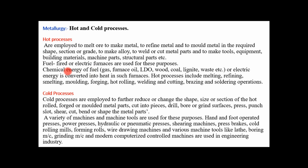Temperature is the major criteria in hot processes, as metal properties change with temperature. To maintain temperature, heat energy is required using fuel burned in furnaces. Sometimes fired furnaces are used, sometimes electric furnaces. In conventional processes, fired fuel furnaces use hydrocarbon combinations — gaseous form, oil form, LDO, HDO, wood, coal, lignite, or waste. Nowadays bio-brickets or agricultural waste are used as fuel, reducing the burden of fossil fuels, saving energy, and protecting the environment.